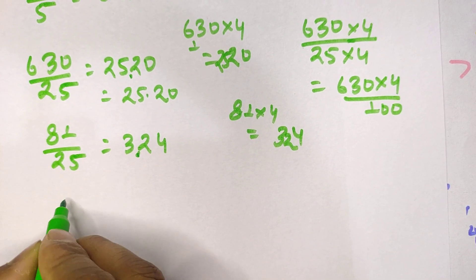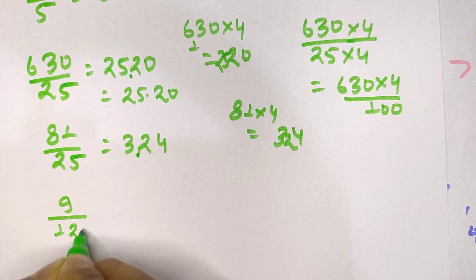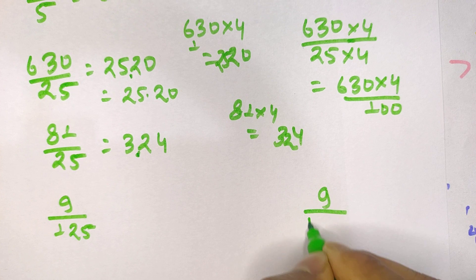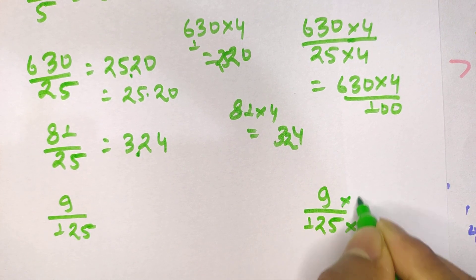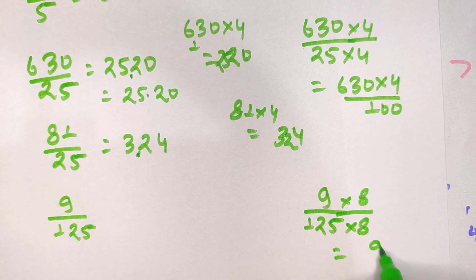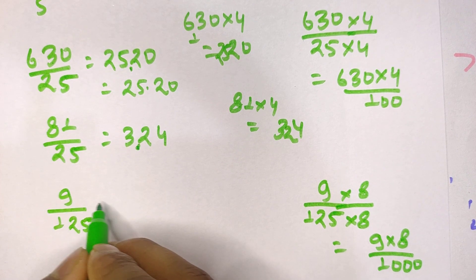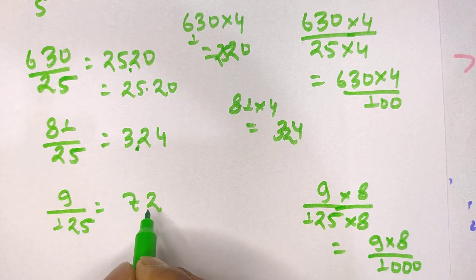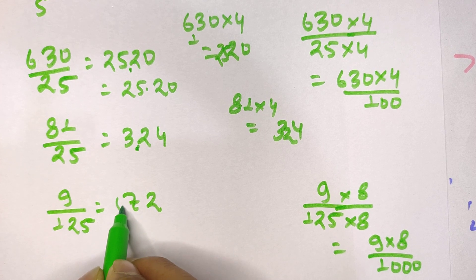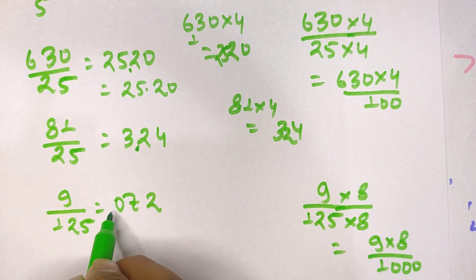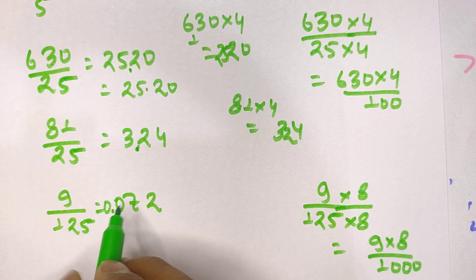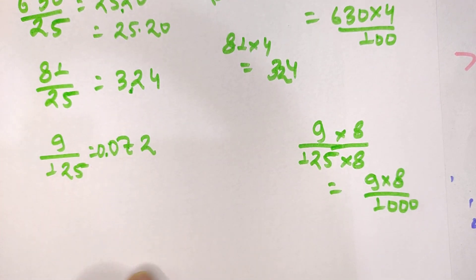Now let's try dividing by 125. For 9 divided by 125, since 125 times 8 equals 1000, we multiply numerator and denominator by 8: 9 times 8 divided by 1000. 9 times 8 is 72, and dividing by 1000 means placing a decimal point after three digits from the last. Since 72 is only two digits, we add a leading zero to make it three digits: 072. So the answer is 0.072.